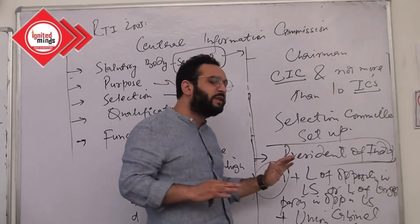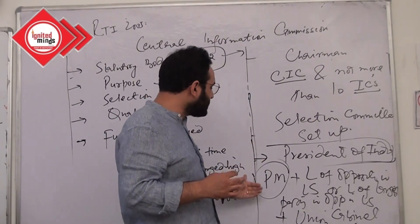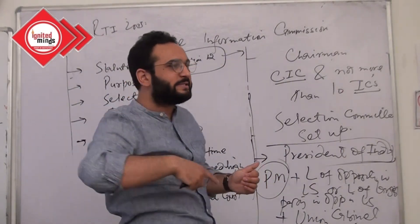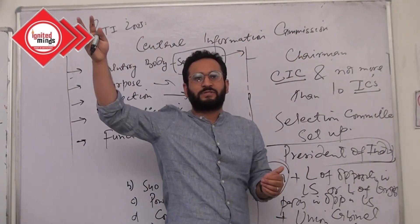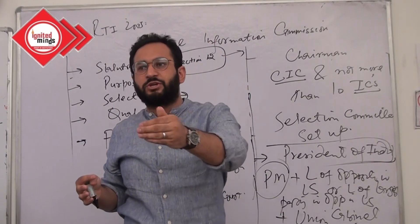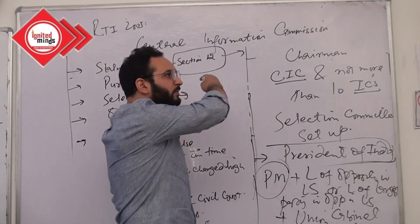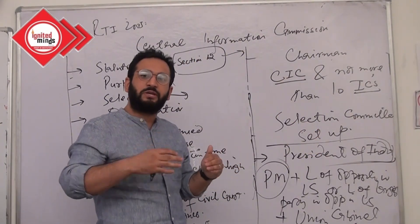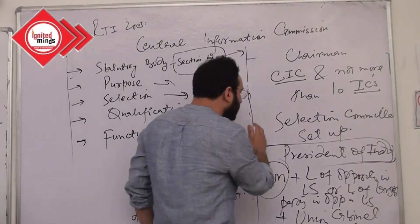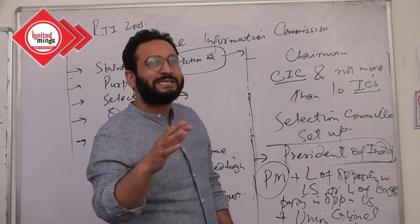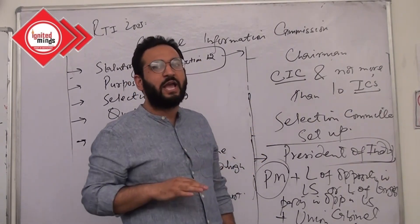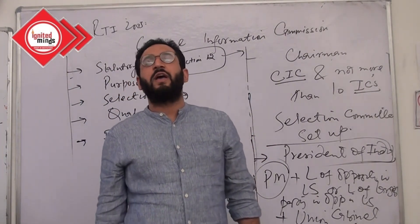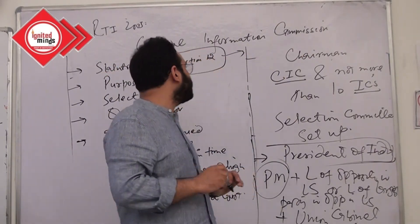The qualifications given are quite vague. Ultimately, the Government of the Day can categorize whoever they wish — they can say he had experience in public life, he was instrumental in a civil society movement, he helped in a welfare programme, he is a former media personnel with experience in mass communication or science and technology. So qualifications are given but they are broad, and the government cannot appoint just anyone — there must be some requisite qualifications ideally. This covers the purpose, selection, and qualification of the CIC and ICs.